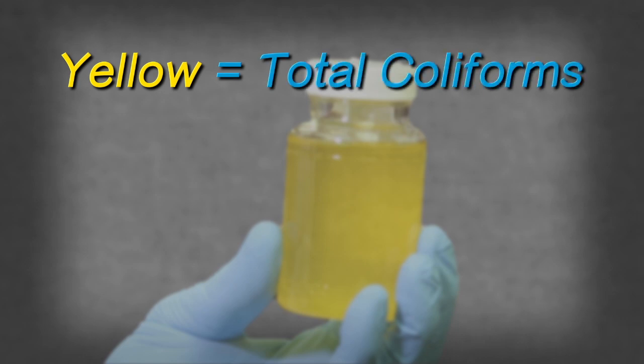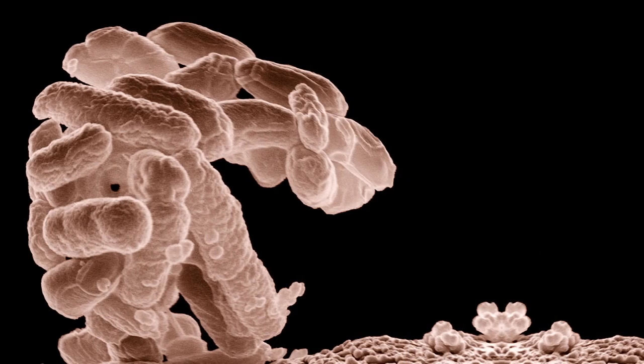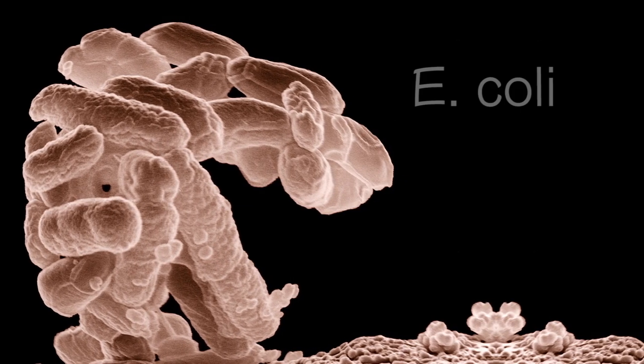In this case, we also need to determine if the more critical fecal coliforms are present. The MUG portion of the MMOMUG is a special ingredient that will fluoresce bright blue under an ultraviolet lamp if the most common fecal coliform, E. coli, is present.